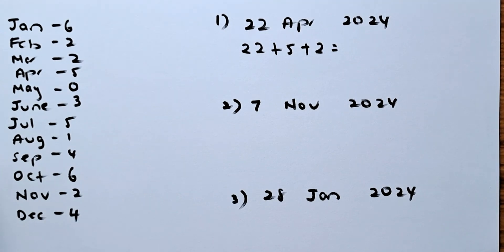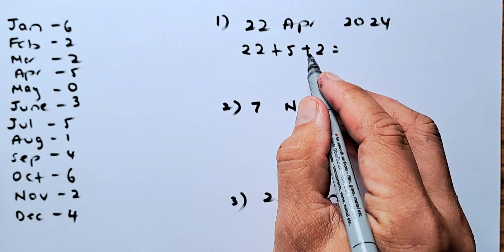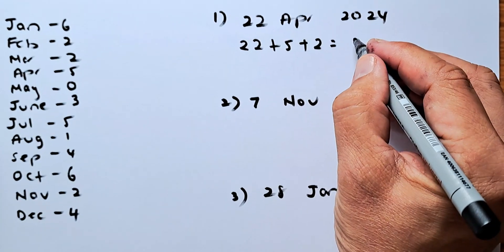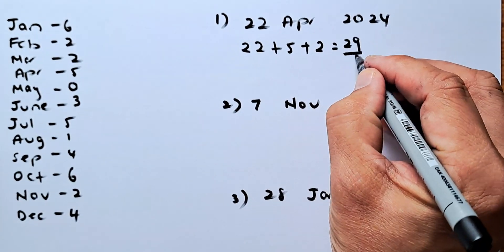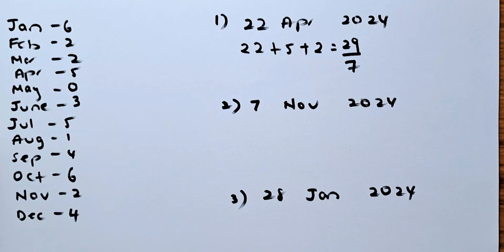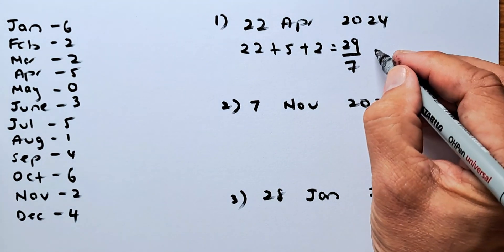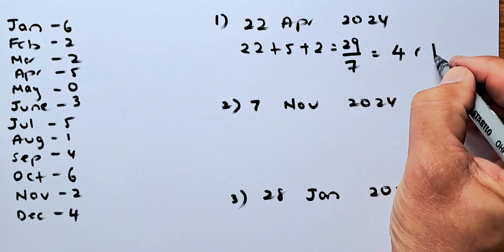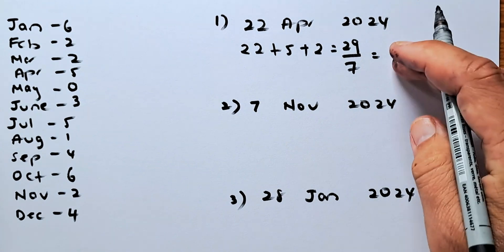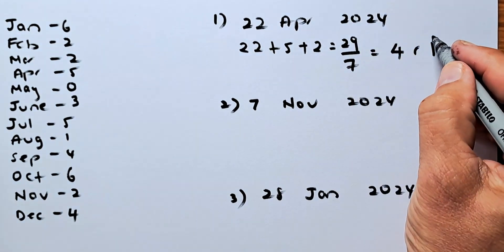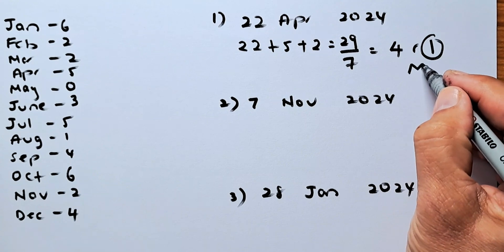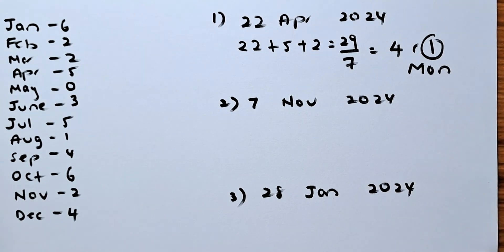When you add the total, it's going to be 22 plus 5 is 27. 27 plus 2 is going to be 29. 29 divided by 7, you're going to get 4, remainder 1. 4 times 7 is 28 plus 1 is 29. So remainder 1, so it has to be a Monday.